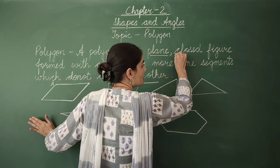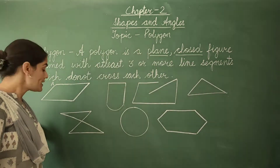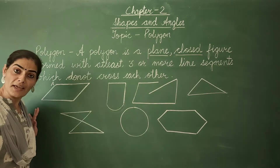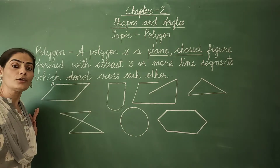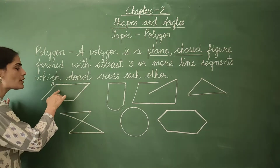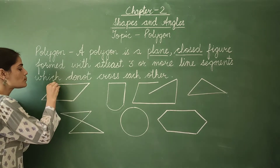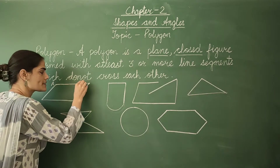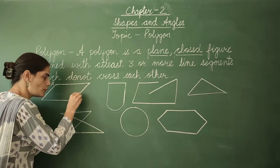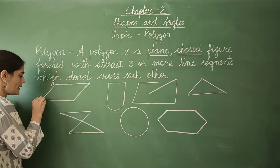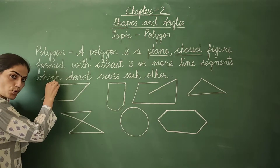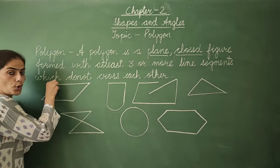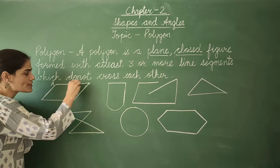The second important thing is it is a closed figure. It is a closed figure, which means that the beginning and ending points are the same in such figures and there are no gaps. So let's learn it with more clarity with the help of this figure. This point A is the beginning point of this figure. I start from point A, move along, and my figure comes to an end at the same point. So the beginning and ending points are the same, and there is no gap.